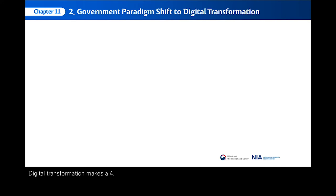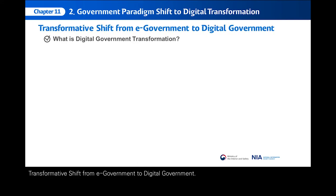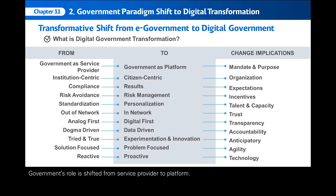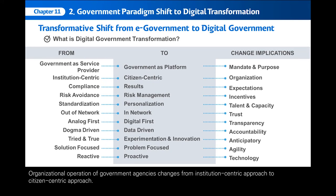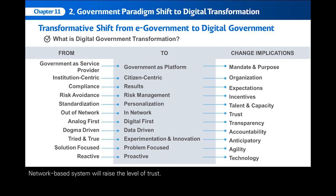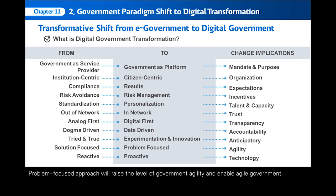Digital transformation makes a fourfold transformative shift from e-government to digital government. Government's role shifts from service provider to platform. Organizational operation changes from an institution-centric to a citizen-centric approach. Governments will go beyond standardization for efficiency toward personalization, such as customization and tailored services. Network-based systems will raise the level of trust. Data-driven administration and data-based decision-making will enhance accountability. A problem-focused approach will raise government agility and enable agile government, with the basic approach changing from reactive to proactive by using transformative technologies.